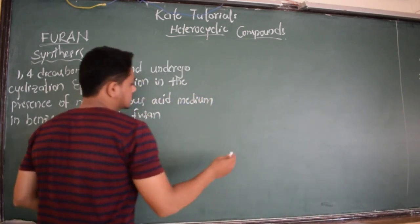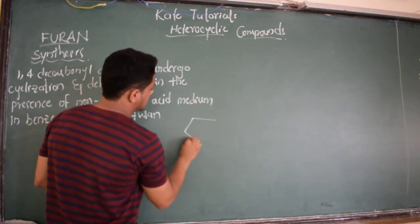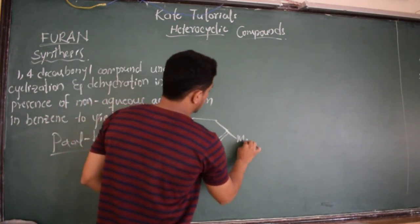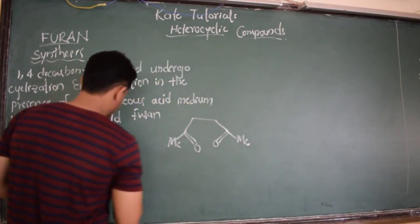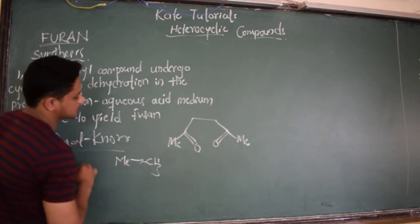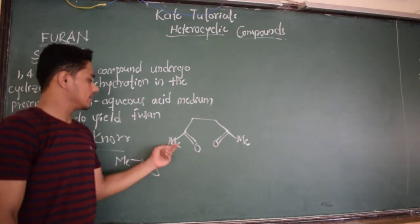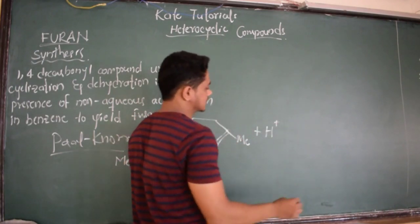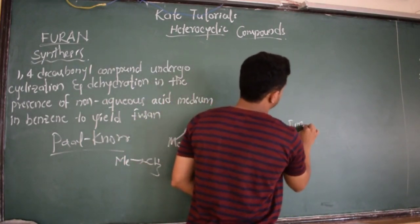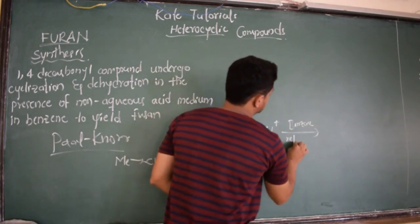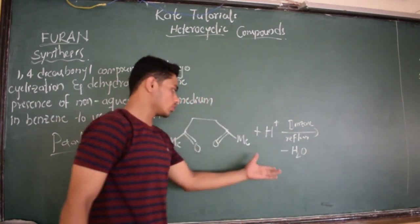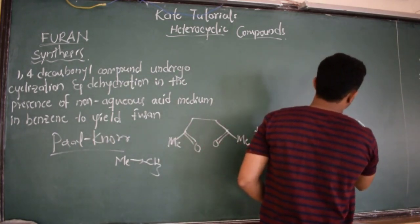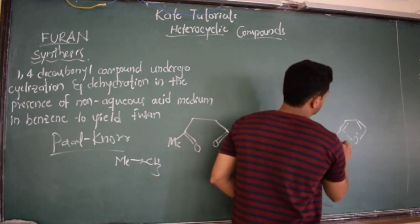The reaction is like this: we consider a 1,4-dicarbonyl component where ME stands for methyl group, CH3. In the presence of acid in non-aqueous medium — using benzene as the solvent — we reflux it. Reflux means we remove water, H2O, and we get the product, furan.